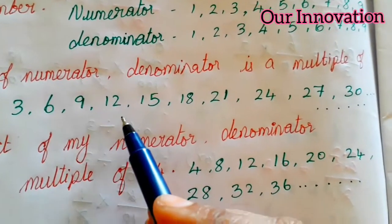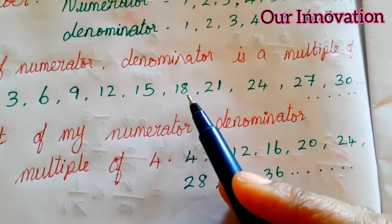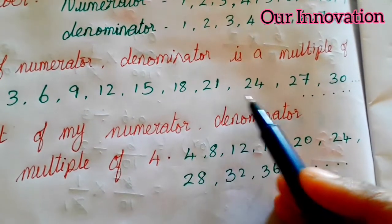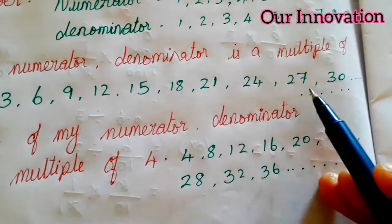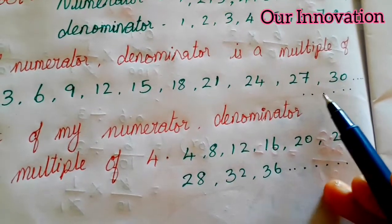So 3 is a multiple of 3: 3, 6, 9, 12, 15, 18, 21, 24, 27, 30, and so on.